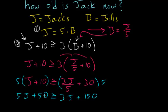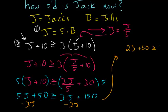Now putting all the J's on one side we can subtract three J from each side of the equation. We're left with two J plus 50 is greater than or equal to one fifty.